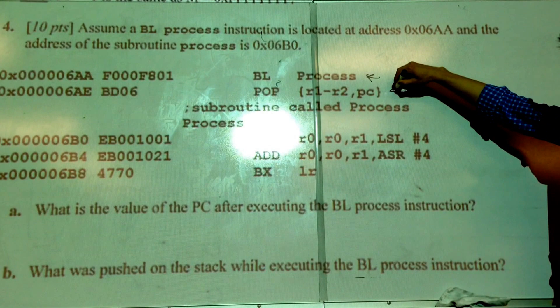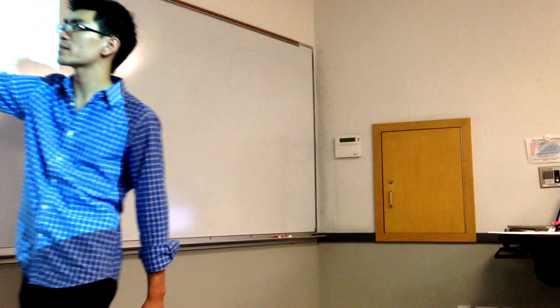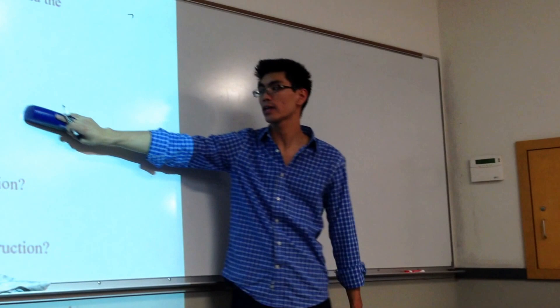It's going to be pointing here. Right? Because what does the BL instruction do? Right. How? Right. So it adds the offset. Right? And then it puts it into the PC. So I'm going to branch to here. So my new PC is going to, let me move this up so I don't want to move it.